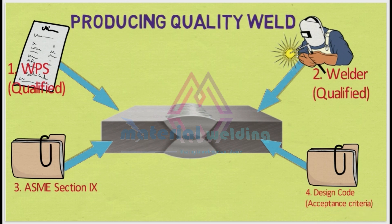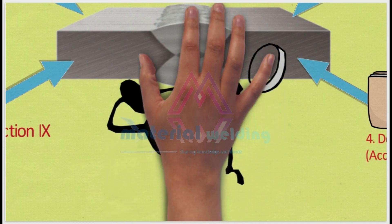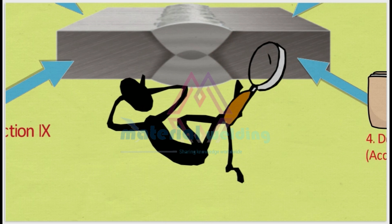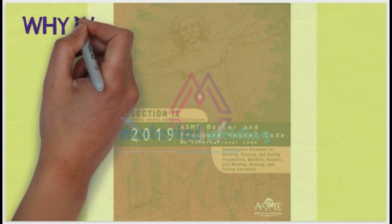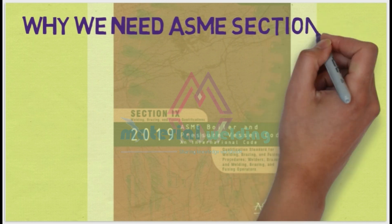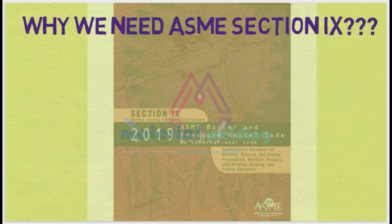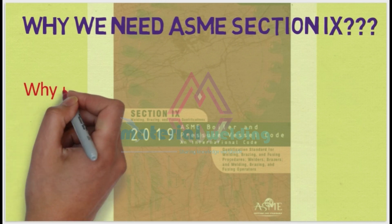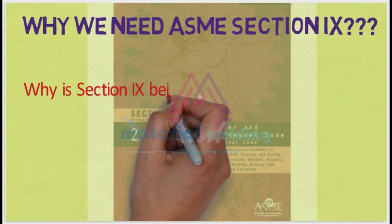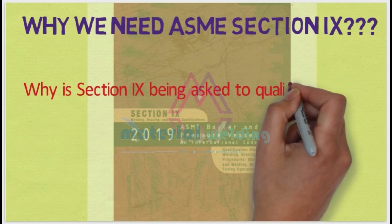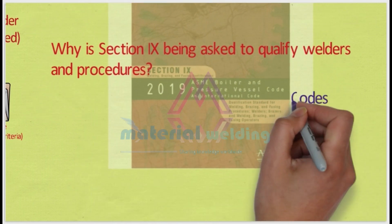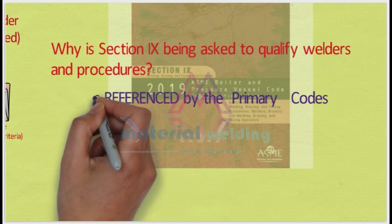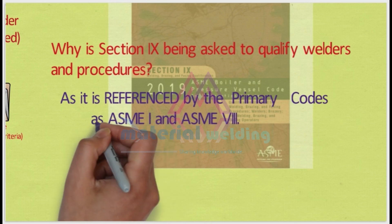And not to forget, we need a welding inspector to perform all these tasks. You can watch our video about welding inspection — what are the different types — available on our YouTube channel. Why is Section 9 being asked to qualify welders and procedures? It is referenced by the primary codes such as ASME Section 1 and ASME Section 8. Also, many times it has been asked by the client to meet the requirements of ASME Section 9.